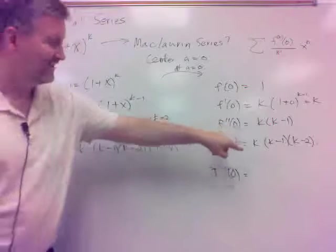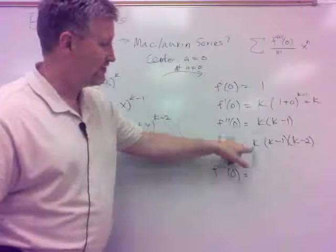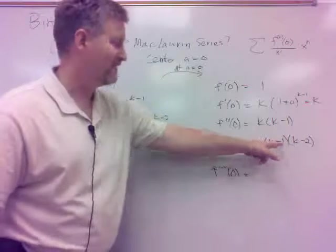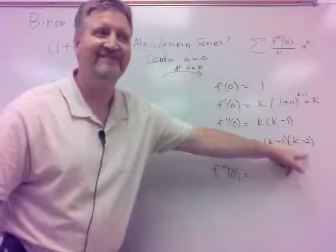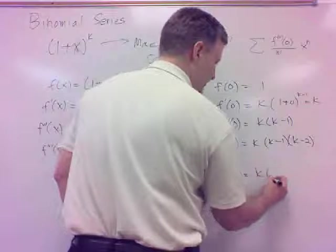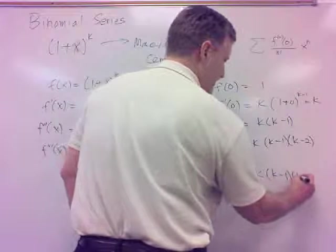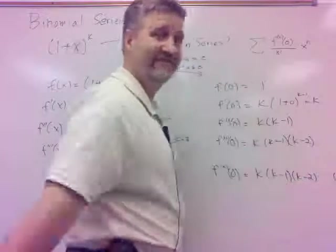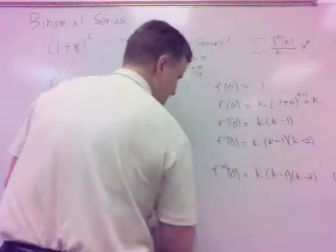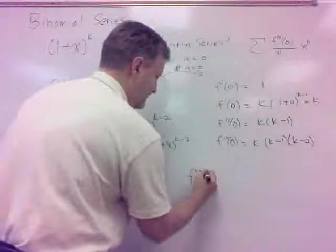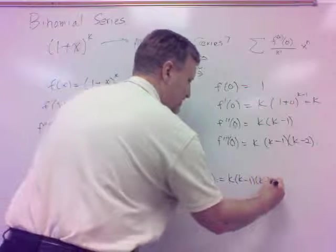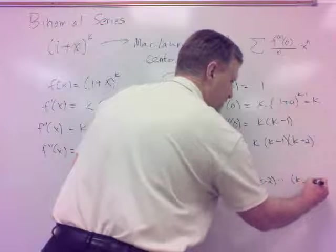So what would be the nth derivative here? Guess what? But the third derivative is k. Does that remind you of anything? It's that countdown product. And notice how many terms I have there. I have three terms on the third derivative, on the second term. So the nth derivative, I would need n terms. So what do I need to go to? k minus n.